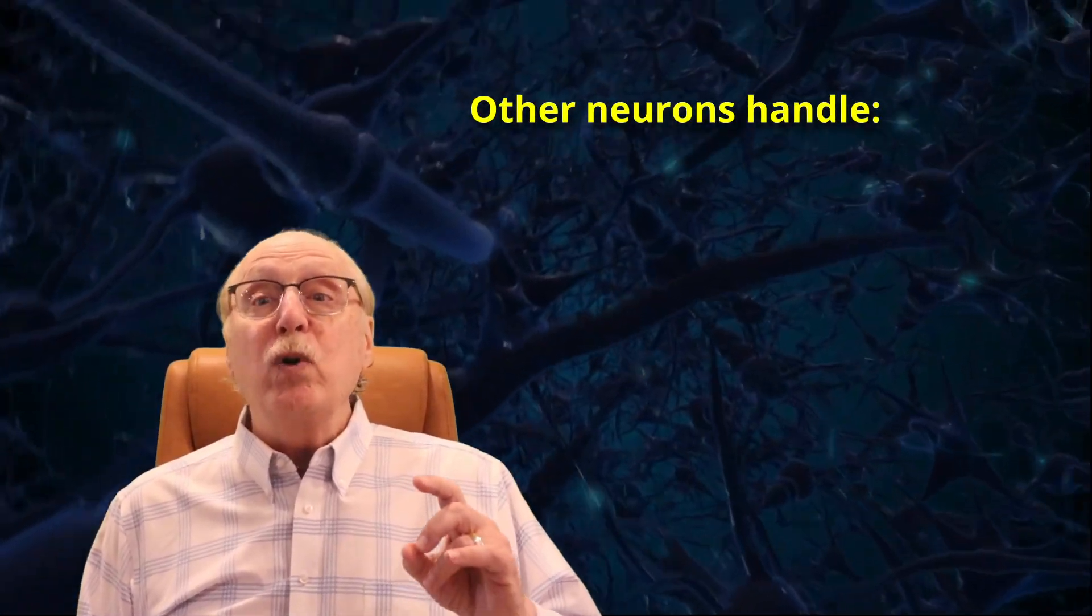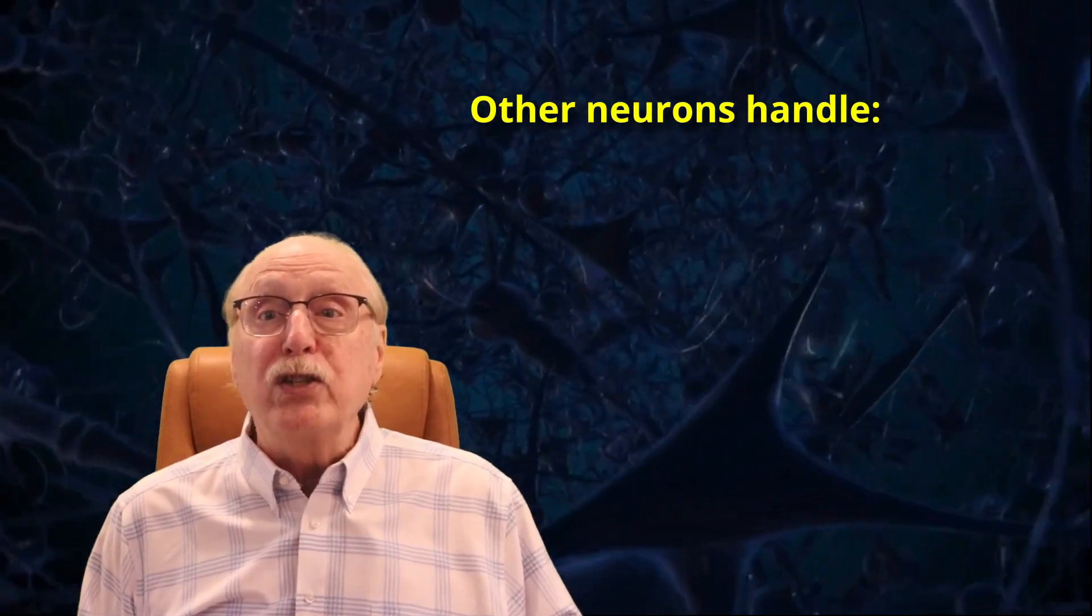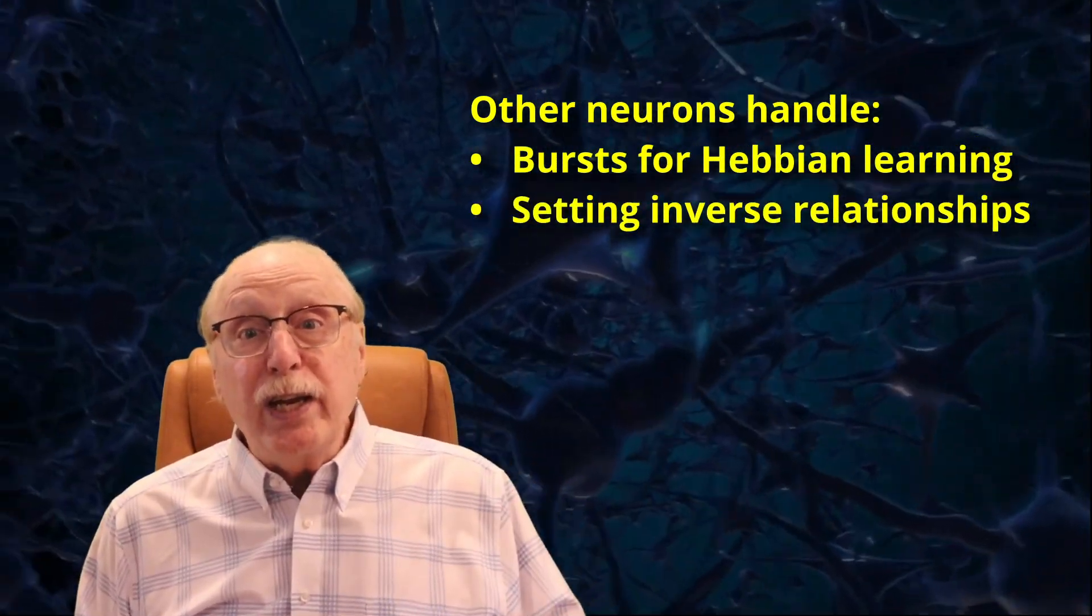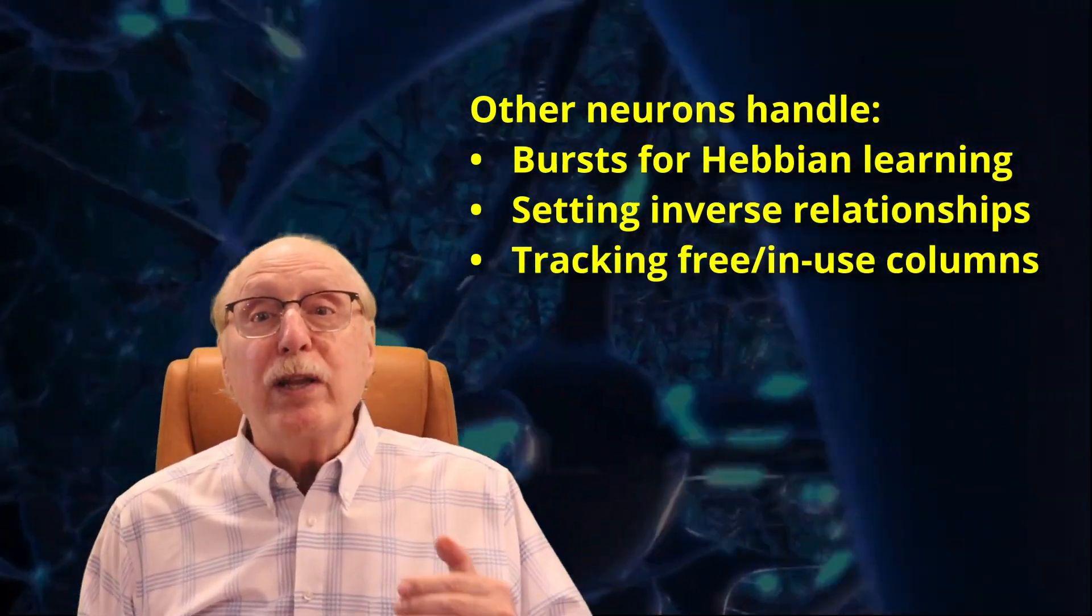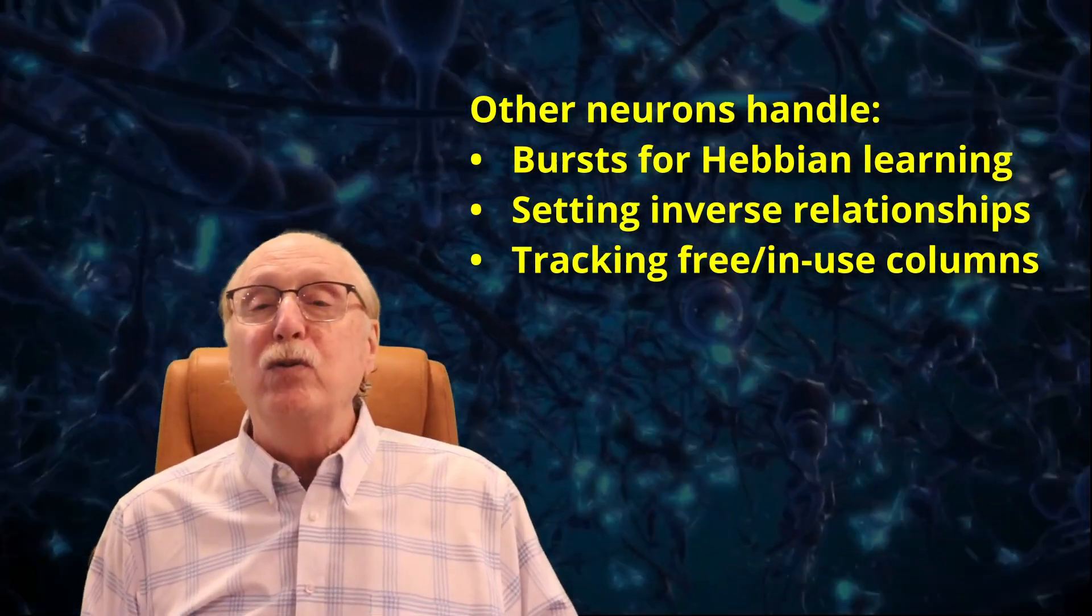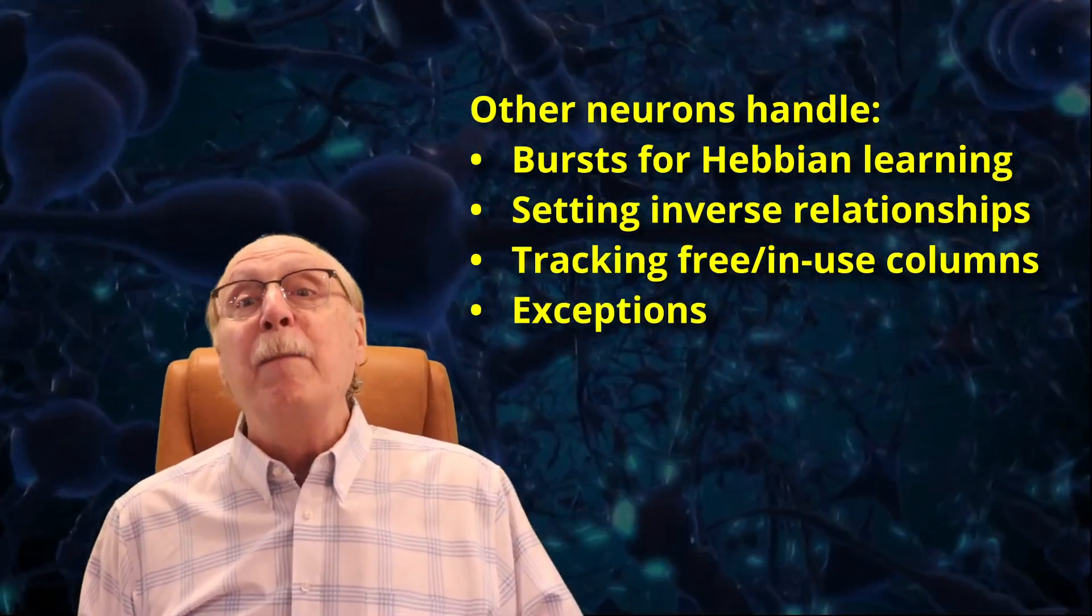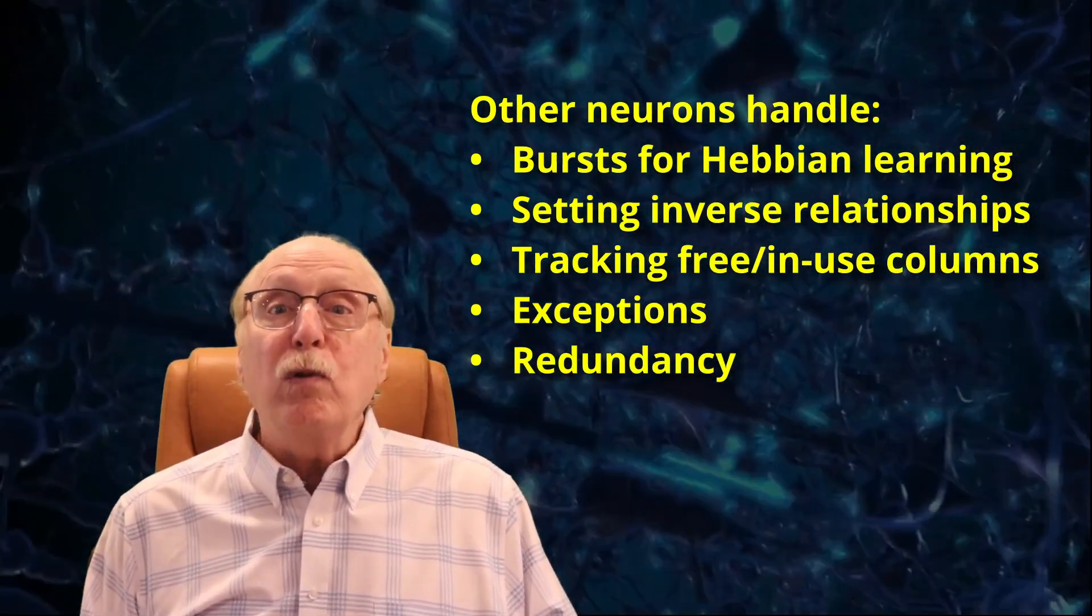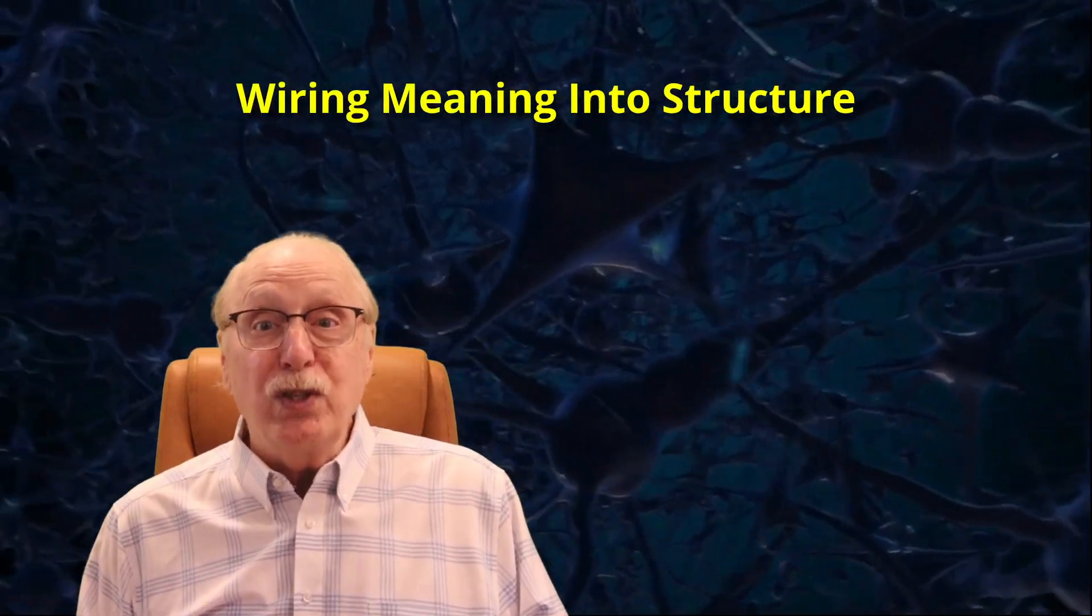Additional neurons within the column support functions like firing the bursts needed for Hebbian learning, setting up inverse relationships, ensuring that a column is only allocated once and not reused until its meaning is forgotten, handling exceptions, and managing local redundancy for robustness and noise resistance.